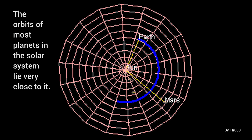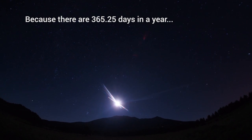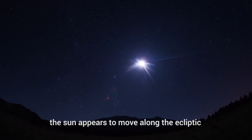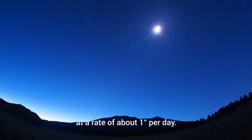The orbits of most planets in the solar system lie very close to it. Because there are 365.25 days in a year and 360 degrees in a circle, the Sun appears to move along the ecliptic at a rate of about 1 degree per day.